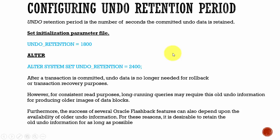In the case of a fixed-size undo tablespace, Oracle will automatically tune for the best possible undo retention period. It comes up with a good number for undo retention based on the tablespace size and past usage history. Even though you configure undo retention for a fixed-size undo tablespace, it is ignored.